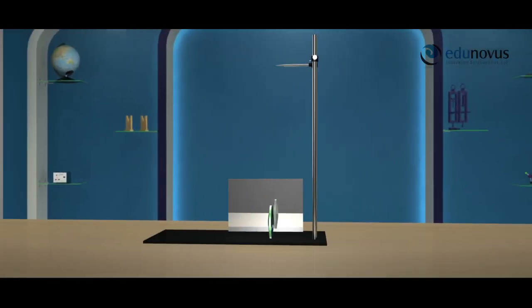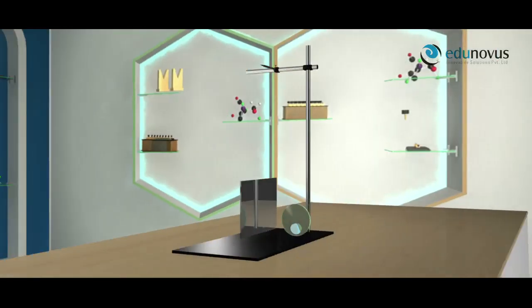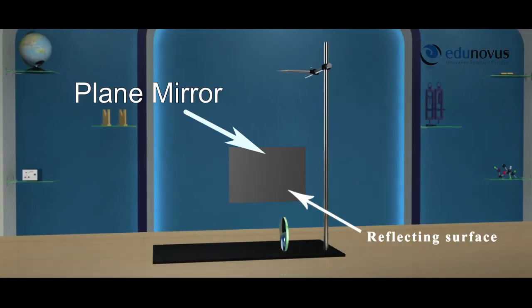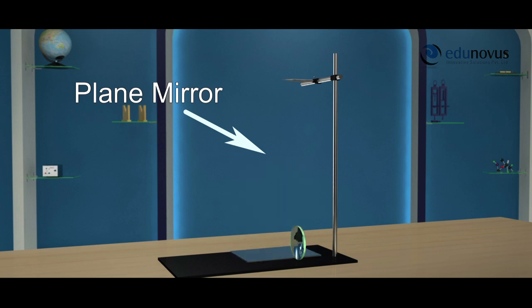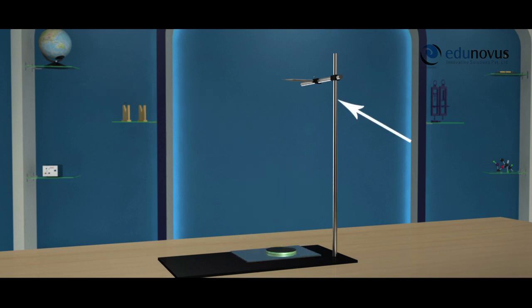Refractive index of a liquid using convex lens. Consider a plane mirror and place it on the horizontal surface. Place the convex lens on top of it. This experiment requires the stand and clamp setup. Clamp the object needle to the stand in such a way that it moves along the principal axis of the lens.